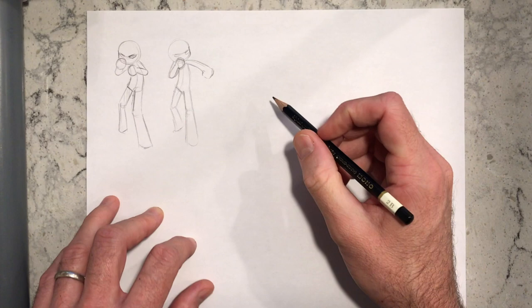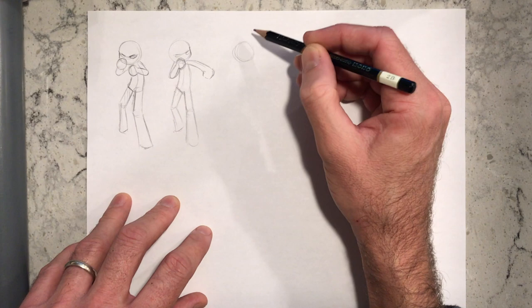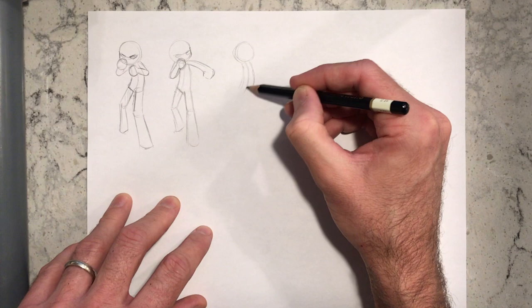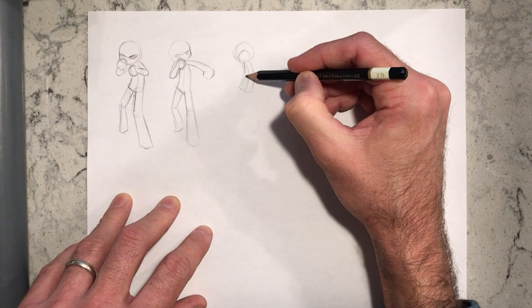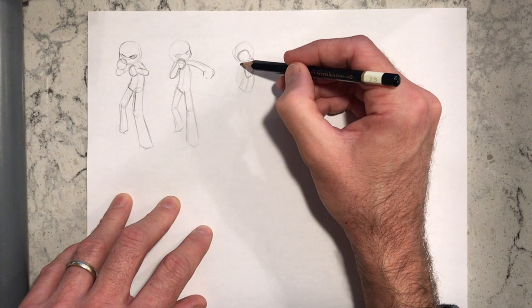This next pose will be a defensive block where both fists will be covering the face and the elbows will be blocking from any hook. However, the chest is left open in this pose, so you'll see there's going to be a space for someone to punch straight in the chest, although that's not really a great spot to punch with boxing gloves.